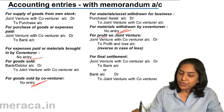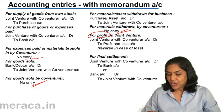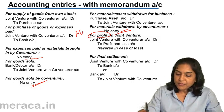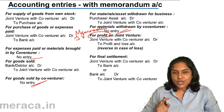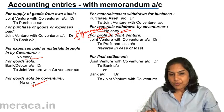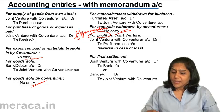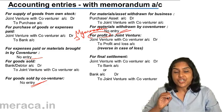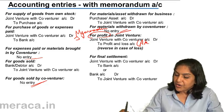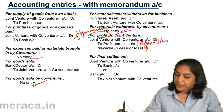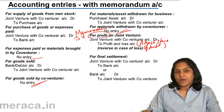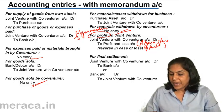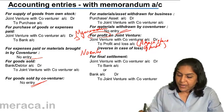To know the profit on joint venture, we need to prepare a memorandum joint venture account — a statement with expenses on one side and incomes on the other side to find out profit or loss. If there is a profit, the entry is joint venture with co-venturer account debit to profit and loss, with Akash's share of profit only. For Bikash's share of profit, there is no entry in Akash's books.